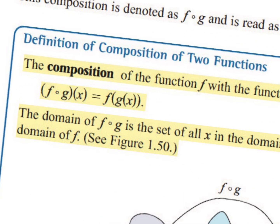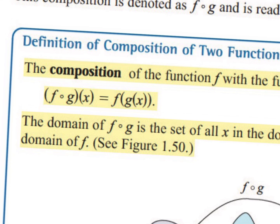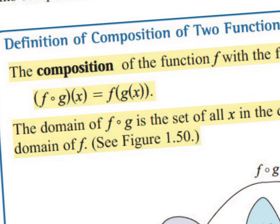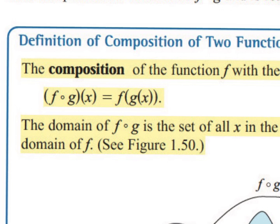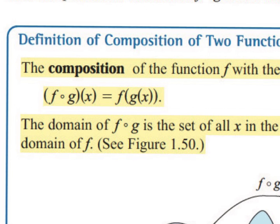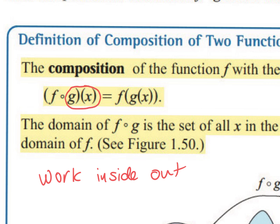Compositions of functions are different than just adding and subtracting. They can be written two ways. That open circle in between two letters — that doesn't say 'fog' and that is not a multiplication sign. An open circle between two letters like this with an X or a number is a composition. What you're doing is taking one function and plugging it into the other. You want to work inside out — start with whatever is closest to X.